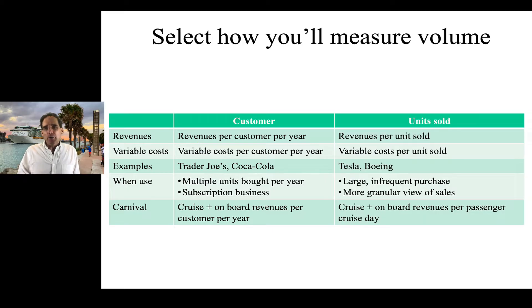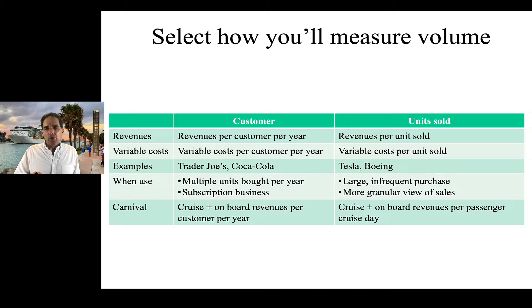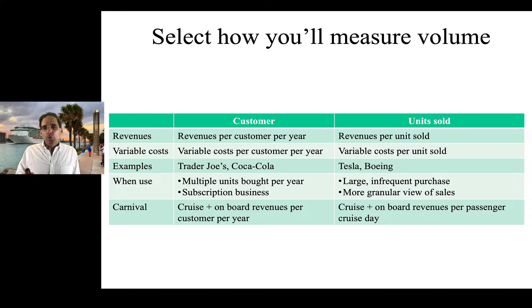Another way to measure volume is by units sold. So instead of revenue per customer, we look at revenue per unit sold — for example, how much revenue Tesla generates for every car it sells — and variable costs are also calculated per unit sold. This approach is particularly helpful for infrequent large-ticket purchases: buying a car from Tesla, buying an aircraft from Boeing. In the case of Carnival, if we go with this approach — which we will — we take cruise plus on-board revenues per passenger cruise day. So our denominator is going to be passenger cruise day, and that's what we'll use going forward.